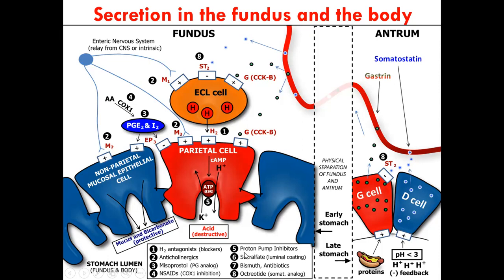You can also use proton pump inhibitors. Proton pump inhibitors inhibit the hydrogen pumps — the sodium-potassium-H+ ATPase pump is inhibited, so hydrogen ions are not pushed into the lumen of the stomach, thereby reducing acid production.